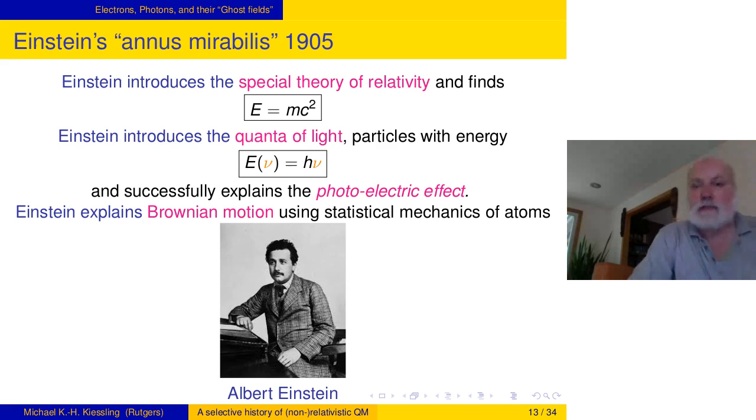1905, enter Mr. Einstein in his wondrous year, where not only does he invent special theory of relativity and concludes that any mass is associated with energy in this proportionality. He introduces quanta of light with something similar like what Planck said. But while Planck said that the energy can only be absorbed or emitted in jumps, but otherwise it's continuously in the field. Einstein says, no, there are particles of light, quanta of light, later called photons, and they carry this energy. The energy they carry is associated with a frequency of the wave that corresponds also to the light.